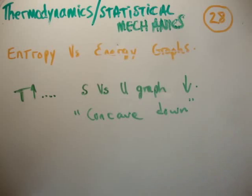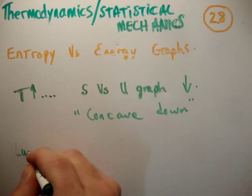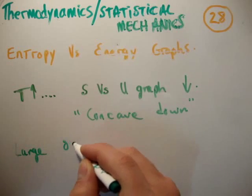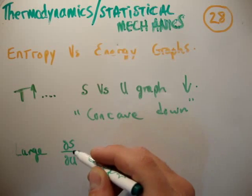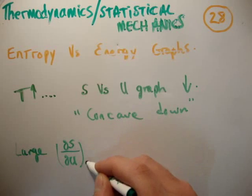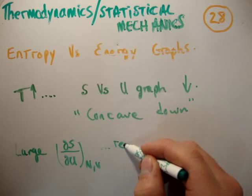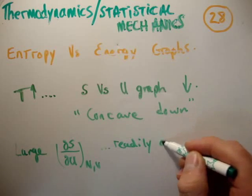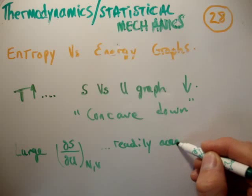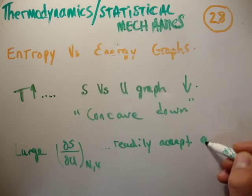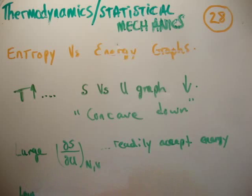Now, this is because the body with the large del S del U, at constant N and constant V, will readily accept energy. And as a result, it's at low temperature.